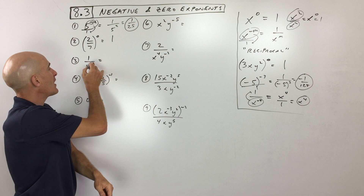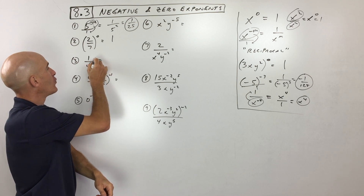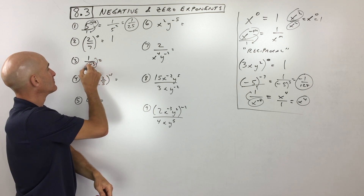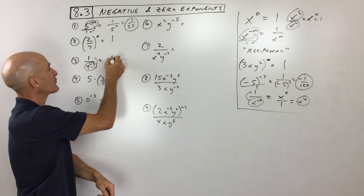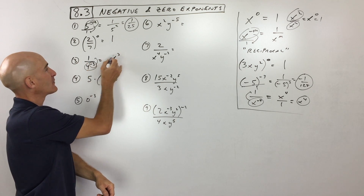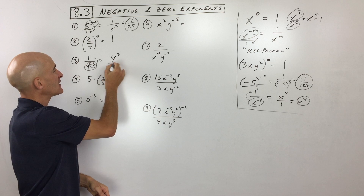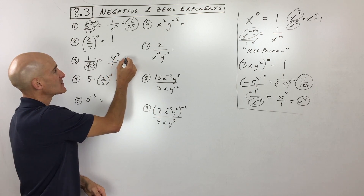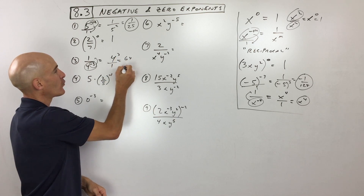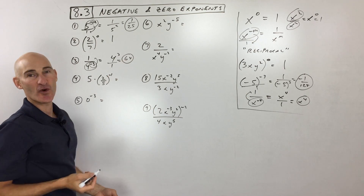When you have a negative exponent, move the whole quantity to the other side of the fraction bar and make it from a negative 3 to a positive 3 — you can think of this as being over 1. Then 4 times 4 times 4 is 64 divided by 1, which is just 64.